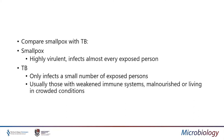If we compare smallpox with TB: smallpox is a highly virulent organism and it infects almost every exposed person, which is why it was so important to eradicate it. TB only infects a small number of exposed persons generally. In areas of high incidence such as sub-Saharan Africa, it can affect more persons because we increase the number of exposed persons. It is usually seen in those with weakened immune systems, those who are malnourished or living in crowded conditions.